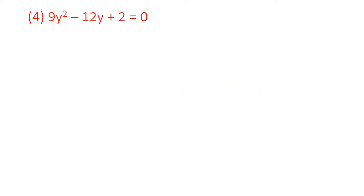So this is what you have on your screen: 9y squared minus 12y plus 2 is equal to 0. Now how are we going to solve this sum? We are first going to check whether this equation is in the form of ax squared plus bx plus c. As we can see, yes it is. Whenever we solve such a sum, we see to it that the value of a should be 1, but here it is 9.